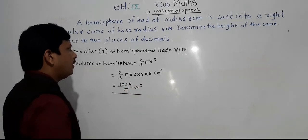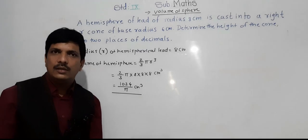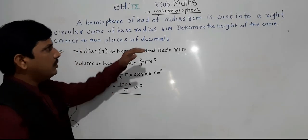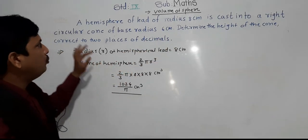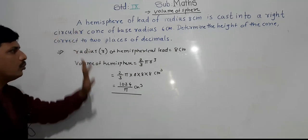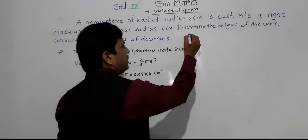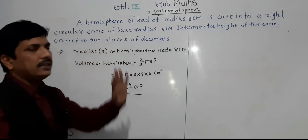So this is the volume of the hemispherical lead. After this, it is cast into a right circular cone of base radius 6 centimeter.